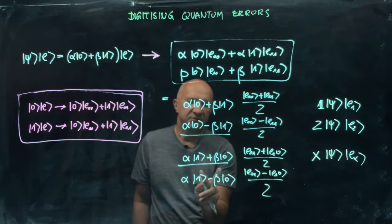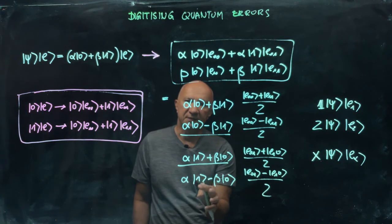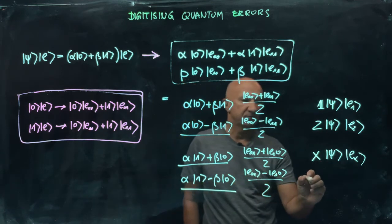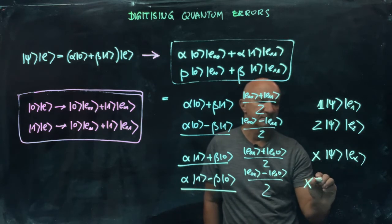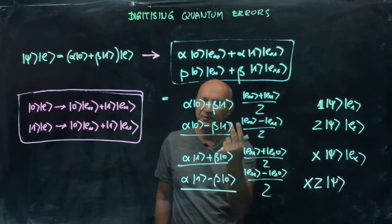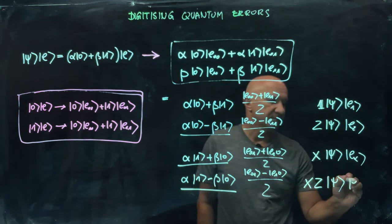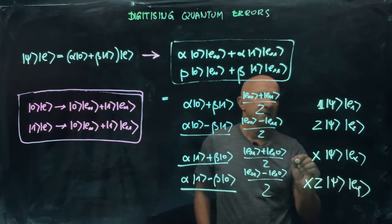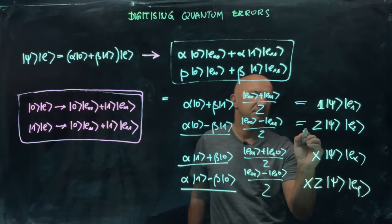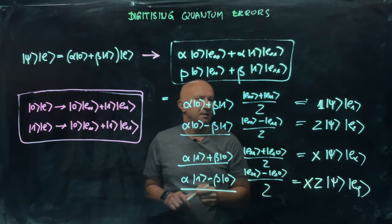And this one, as you can see, is the result of applying the Z operator and then X operator to state ψ. So we can write this as XZ acting on ψ. First you flip the sign, then you flip the bit values, and call this E_Y.